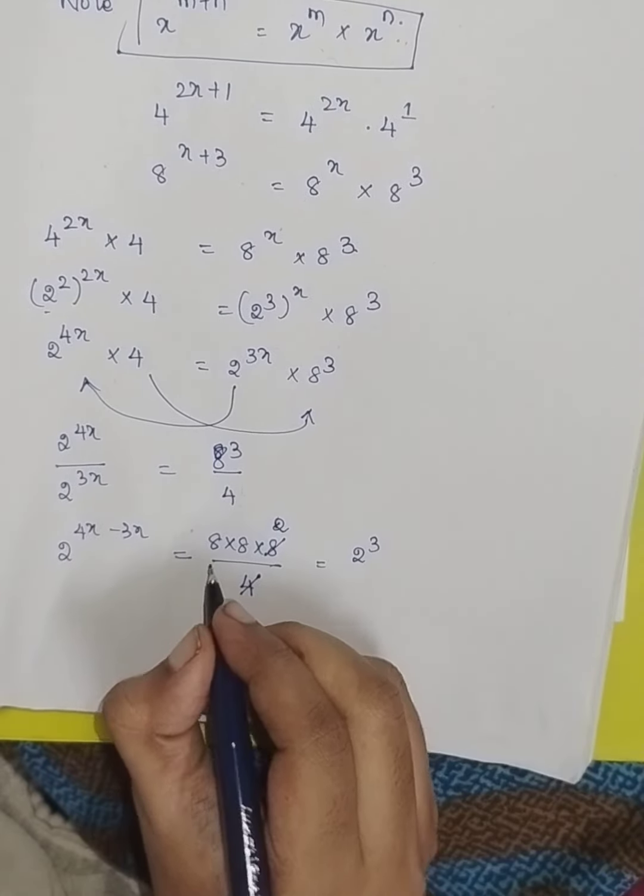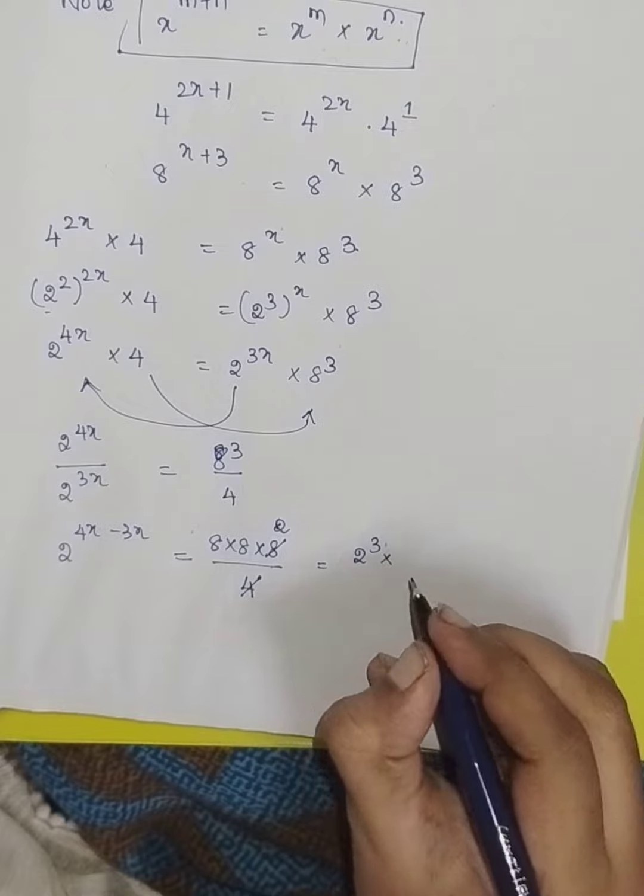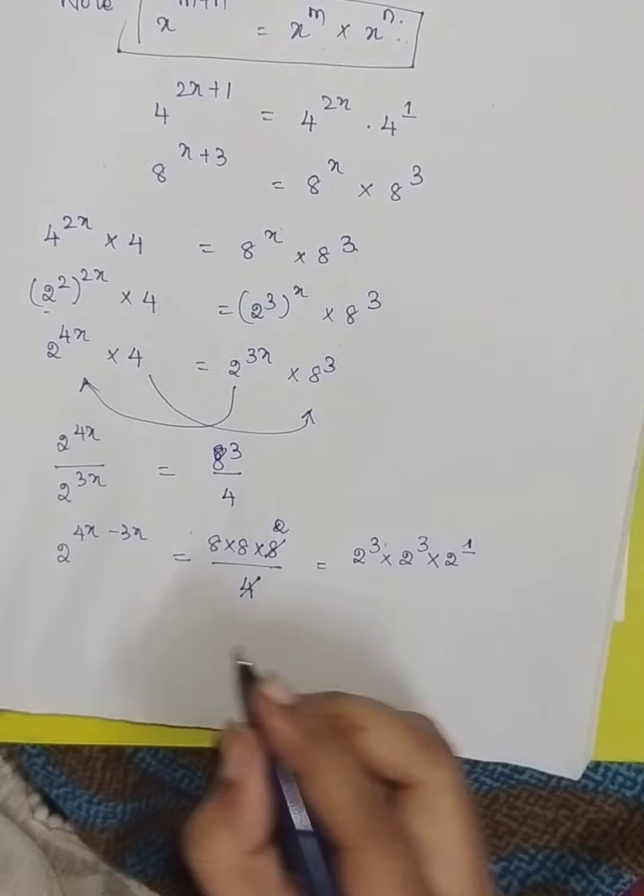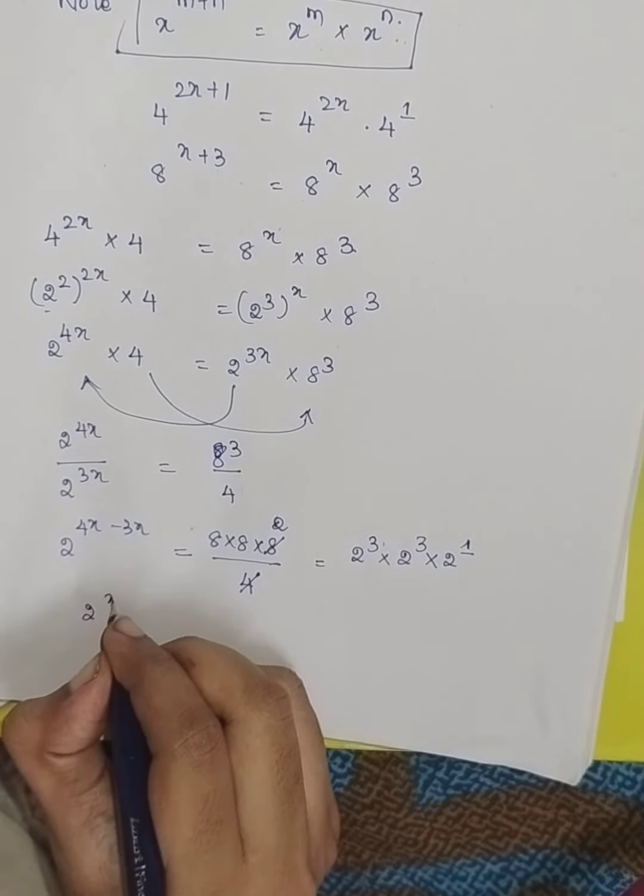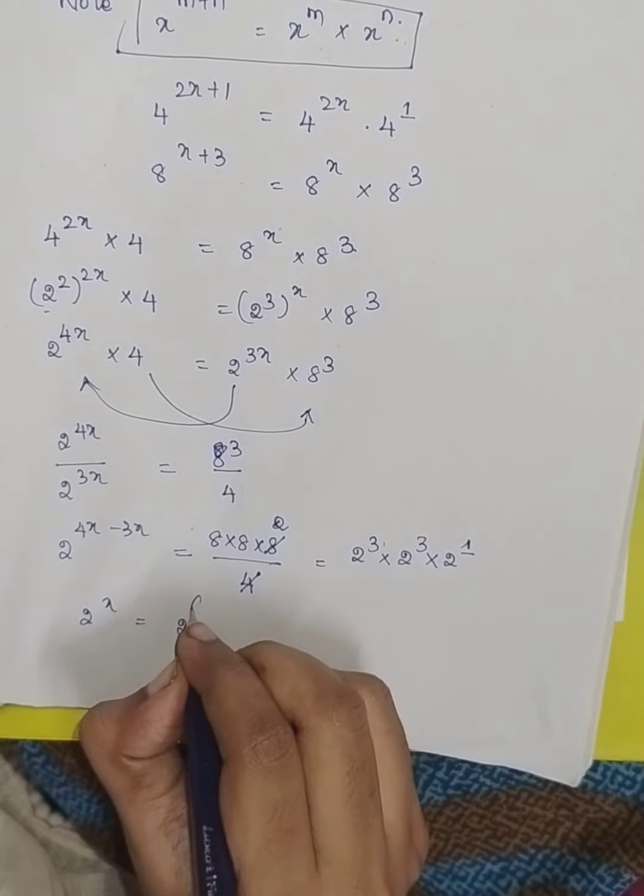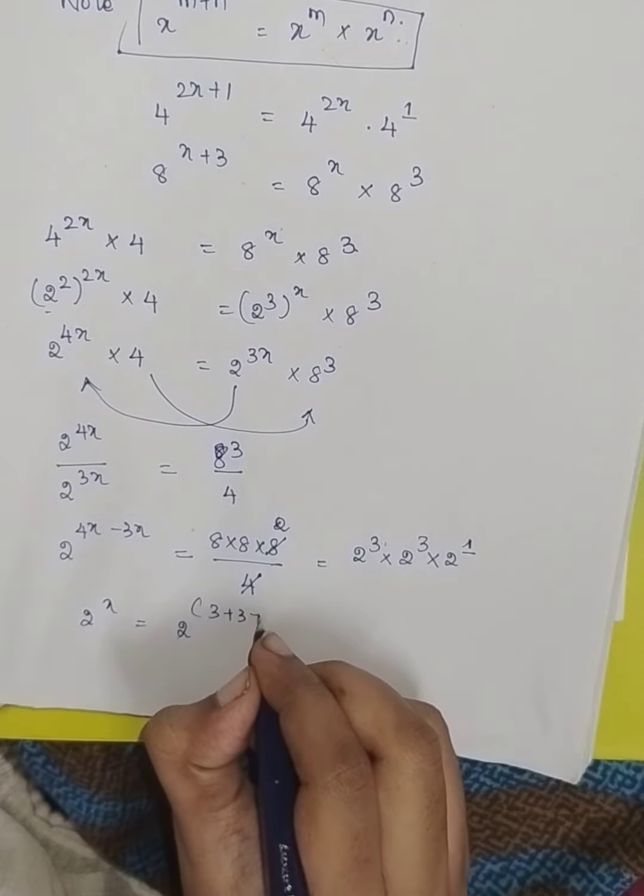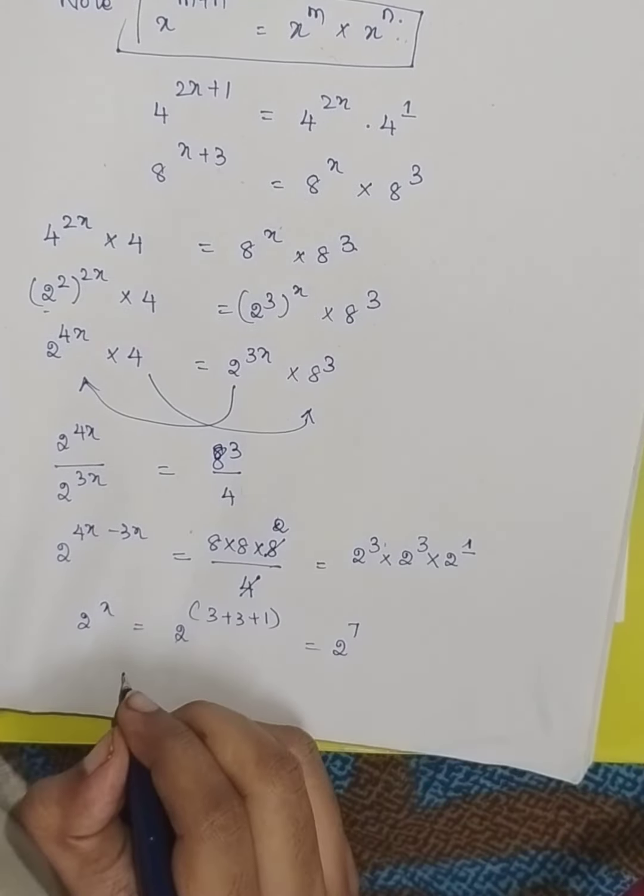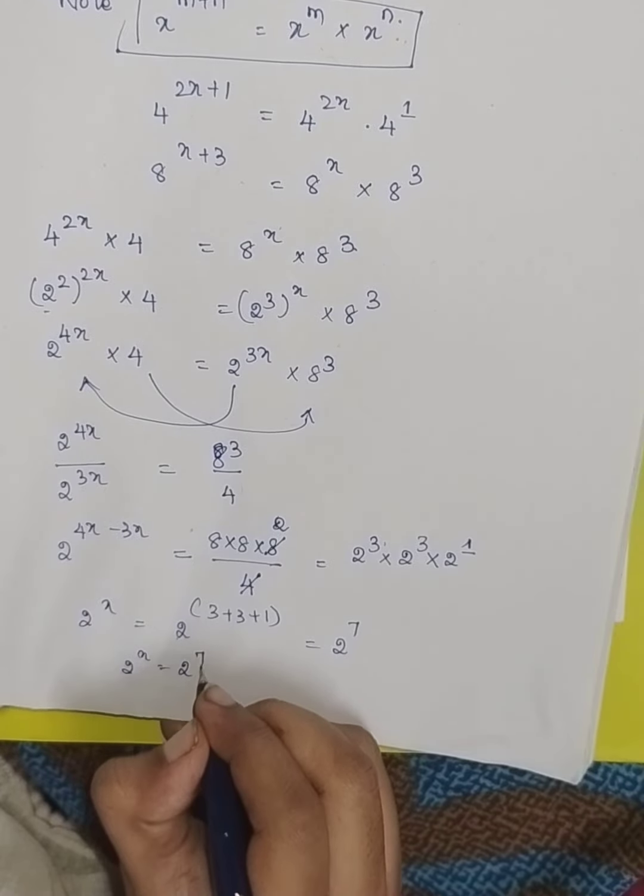I rewrite 8 as 2 power 3 and 2 power 3 into 2 power 1. Therefore, 2 power x is equal to 2 power 3 plus 3 plus 1 which is equal to 2 power 7. So, 2 power x is equal to 2 power 7.